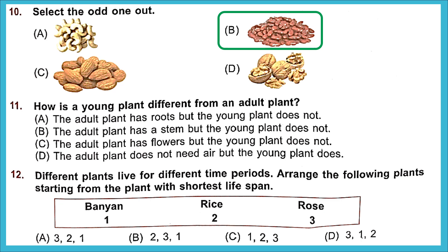Question 11: How is a young plant different from an adult plant? The adult plant has flowers but the young plant does not — this is the right answer. A young plant is not mature; when the plant matures and becomes an adult it starts producing buds and flowers. So option C is the correct statement.